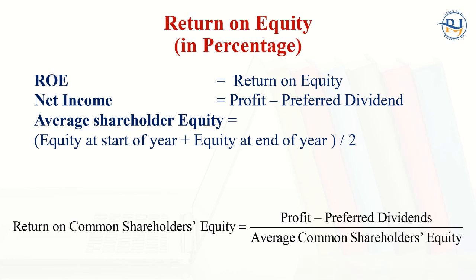Once net income is calculated, we deduct the preferred dividend. Preferred dividend is paid to preferred shareholders, who do not have voting rights but are given preference at the time of liquidation — their money is returned first. Average shareholder equity means equity at the start of the year plus equity at the end of the year divided by two. So the formula is: Return on Common Shareholder Equity = (Profit − Preferred Dividends) / Average Common Shareholder Equity, expressed as a percentage.